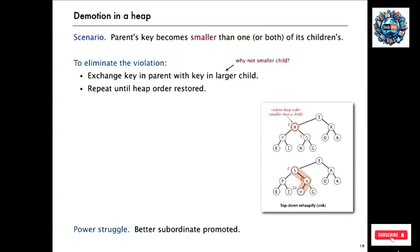There's another scenario where a key becomes smaller — for whatever reason a parent's key decreases and might become smaller than one or both of its children. In this case, the value at position 2 has changed to H, and that's smaller than both its children. To fix that violation, we figure out which of the children is larger — in this case it's S — and exchange it with the node that's violating the condition, moving the smaller key down.